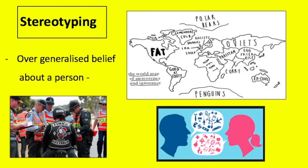Stereotyping is an over-generalised belief about a particular category of people. Stereotypes are generalised because one assumes that the stereotype is true for each individual person in the category.